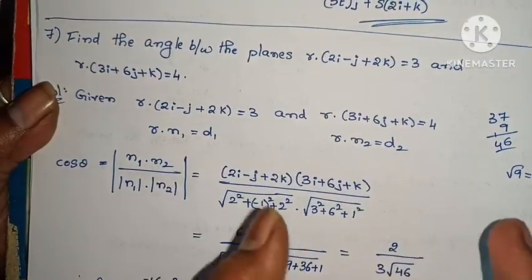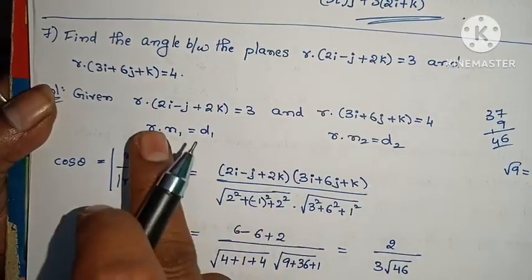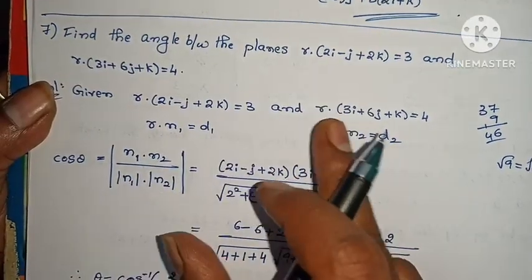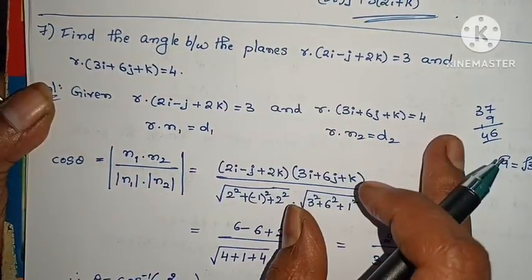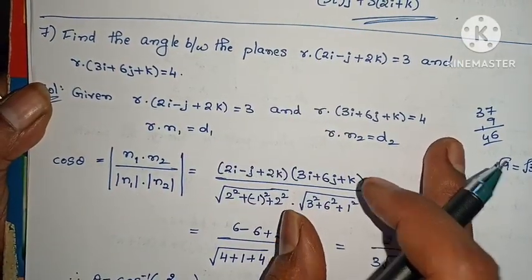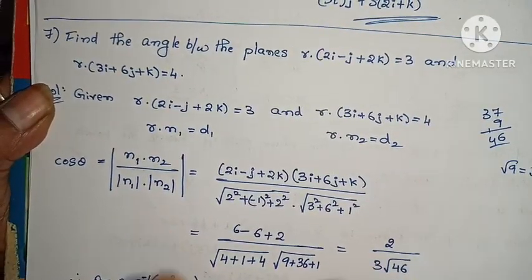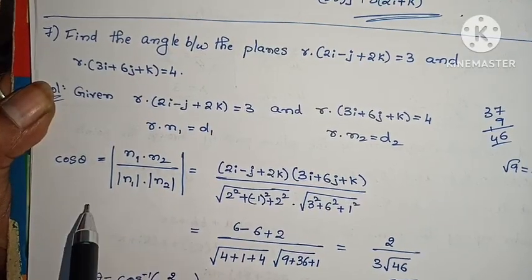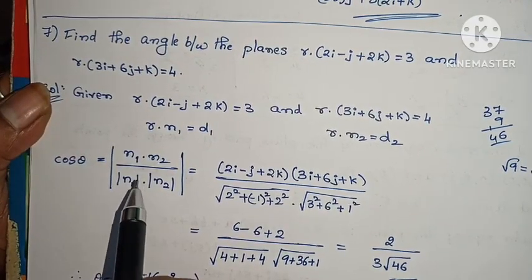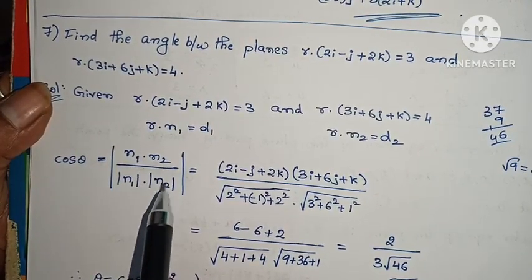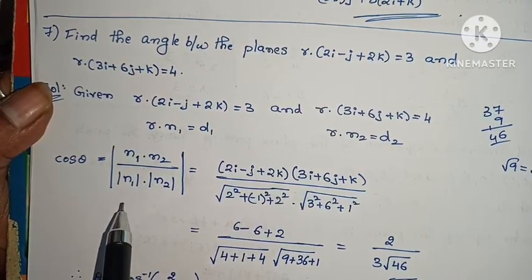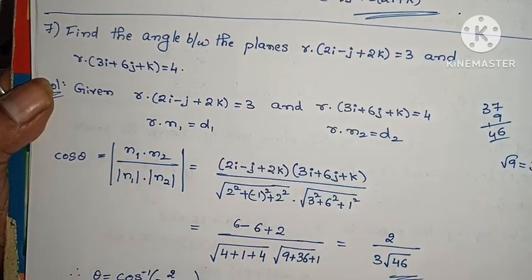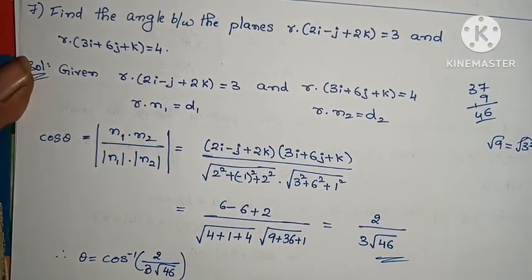Remember this model: r̄·n₁ = d₁ and r̄·n₂ = d₂. And for the angle, the formula is cos θ = |n₁·n₂| / (|n₁|·|n₂|).